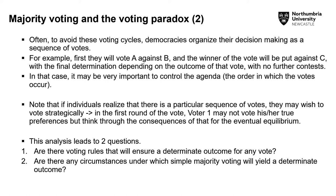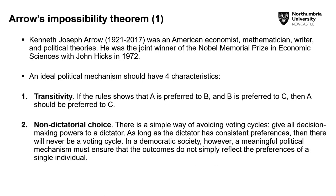This leads us to two questions: Are there voting rules that will ensure a determinate outcome for any vote? And are there any circumstances under which a simple majority voting will yield a determinate outcome? It seems there is no ideal voting system that will reveal true preferences, and this is what Arrow's impossibility theorem deals with.